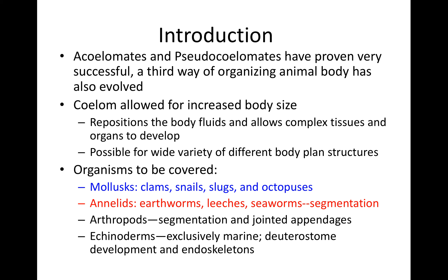Remember with our non-coelomates, which are basically the acoelomates and pseudocoelomates, they were successful, but there is a third way our animal body also evolved — the full-on body cavity called the coelom. It allowed those organisms with the coelom to increase in body size, as well as develop some complex tissues and organ systems, and branch out into a wide variety of different body plan structures.